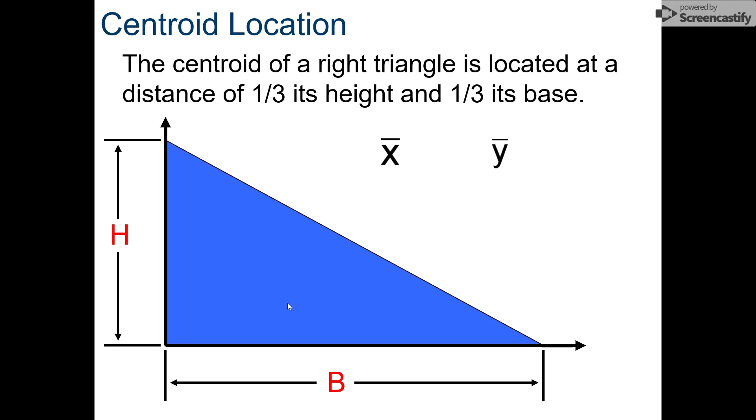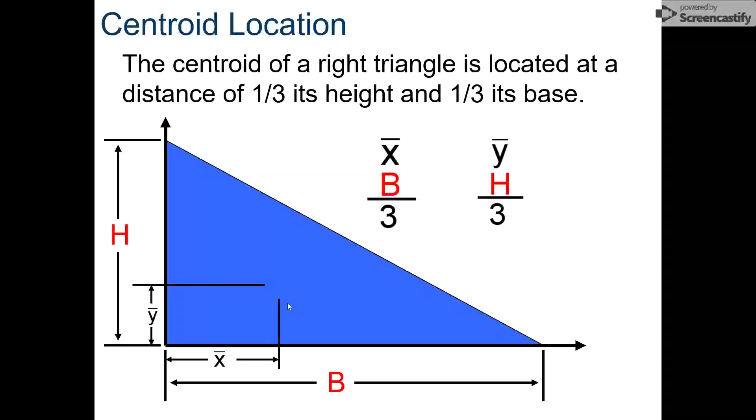For a right triangle, the centroid is located at a distance of one-third of its base and one-third of its height. So the X location is one-third of the base, and its Y location is one-third of the height. Base divided by 3, height divided by 3. The most important thing to remember is that the location is always based off of where the right triangle is, and the centroid for a triangle only works when you're talking about a right triangle. That is key.